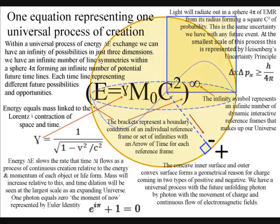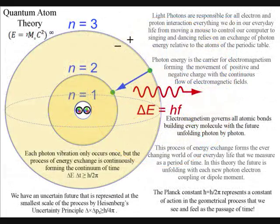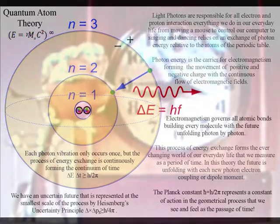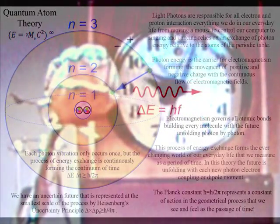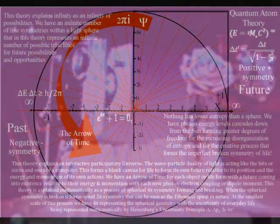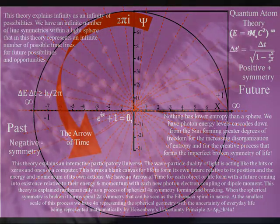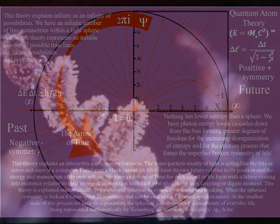These video clips are from mainstream physics videos, and this theory does not change the physics explained so well in these videos. In quantum atom theory, only the interpretation changes, with the mathematics of quantum mechanics representing the physics of time as a geometrical process of energy exchange, with classical physics representing processes over a period of time, as in Newton's differential equations. In this theory, electromagnetism is not just holding everything together; it is forming a continuum of continuous energy exchange, or continuous creation.